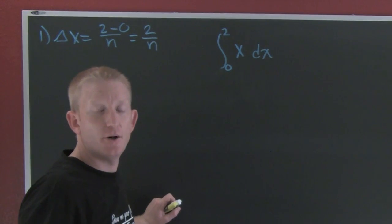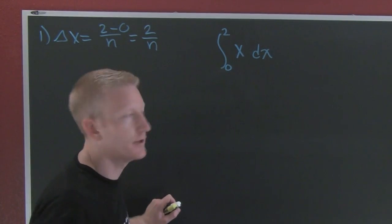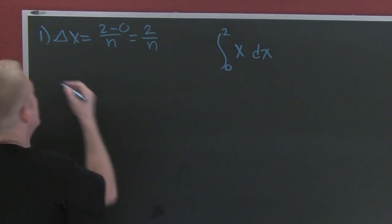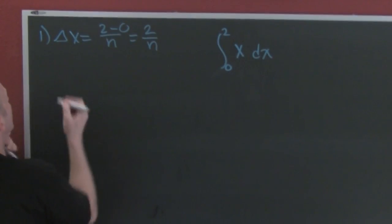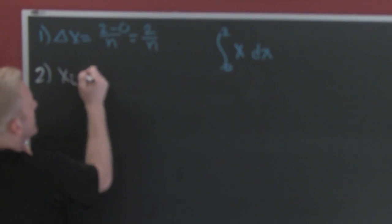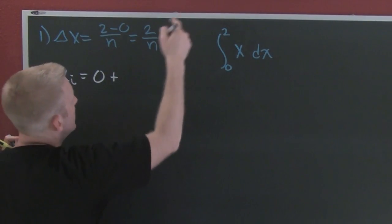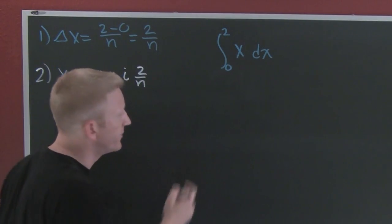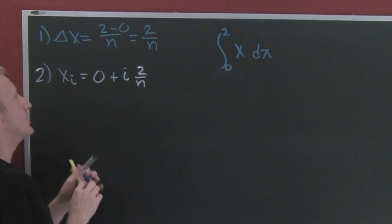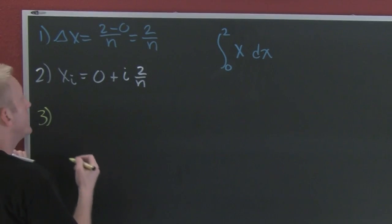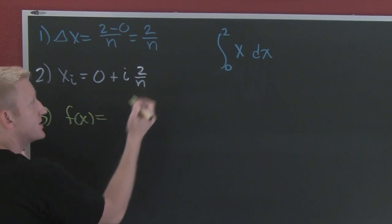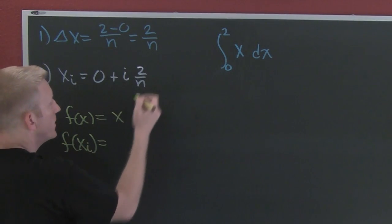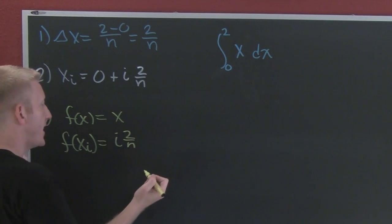This is a rectangle whose length is 2 and whose height is 2 — half base times height, it's 2. Let's see if we can get there. Next step: find xi. That's your first value, 0, plus i times delta x, so xi = 2i over n. Now we need to evaluate our function — step 3, plug it in. Since f of x is x, if we're looking for f of xi, it's going to be 2i over n.